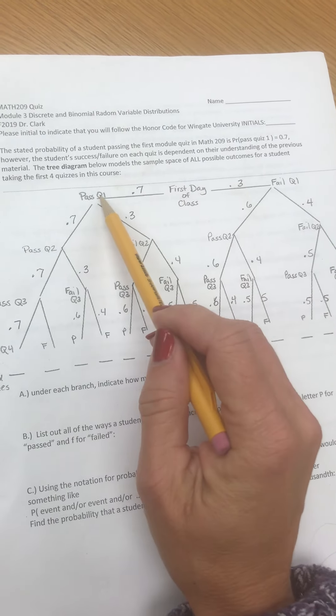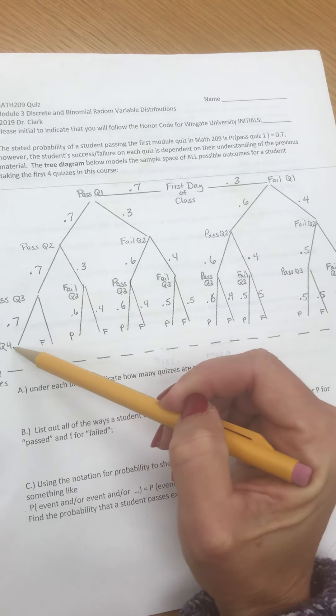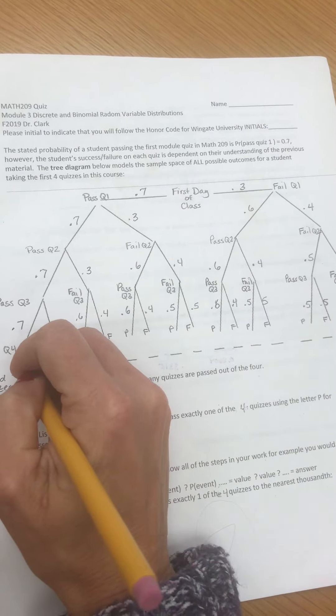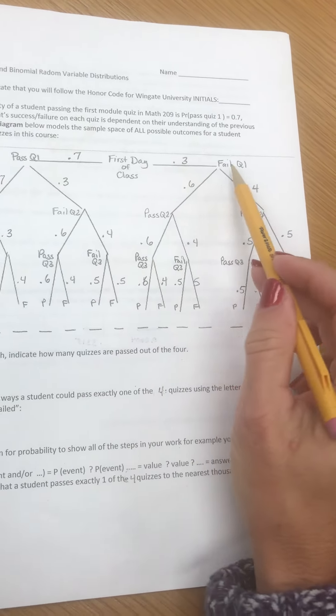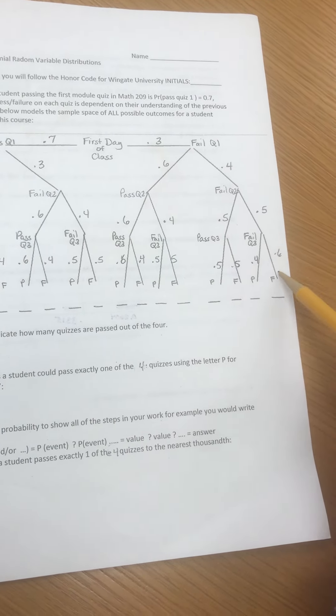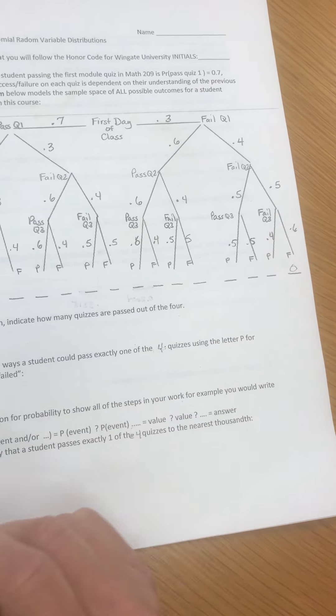So first day of class you pass quiz one, pass quiz two, pass, pass. So in total four quizzes are passed. The other easy branch is if you fail, fail, fail, fail, and zero are passed. Those are the two easiest branches.